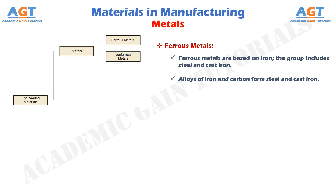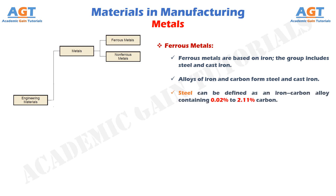Alloys of iron and carbon form steel and cast iron. Steel can be defined as an iron-carbon alloy containing 0.02% to 2.11% carbon. It is the most important category within the ferrous metal group. Its composition often includes other alloying elements as well, such as manganese, chromium, nickel, and molybdenum, to enhance the properties of the metal. Applications of steel include construction (bridges, I-beams, and nails), transportation (trucks, rails, and rolling stock for railroads), and consumer products.